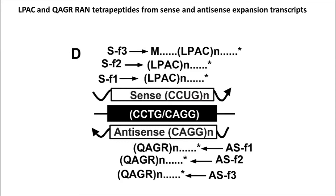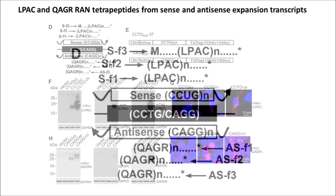That's the protein that's made in the CCTG direction. In the CAGG direction, it's glutamine, alanine, glycine, and arginine, or QAGR.